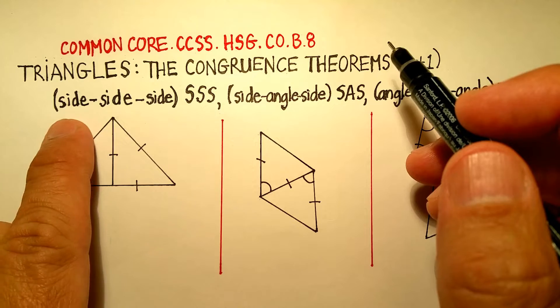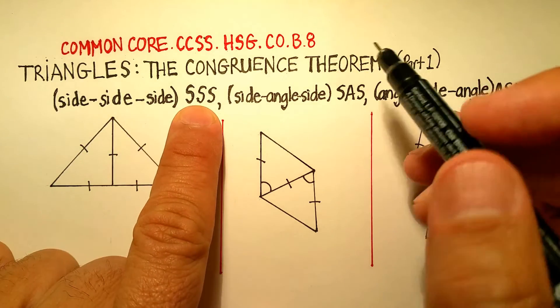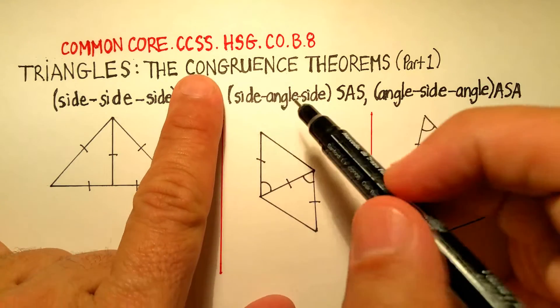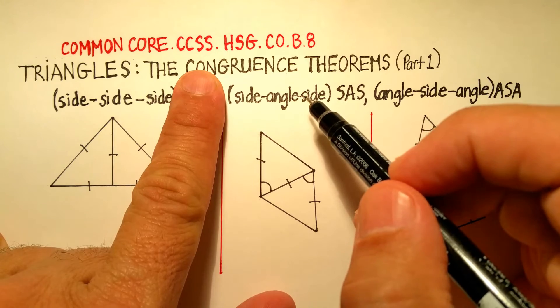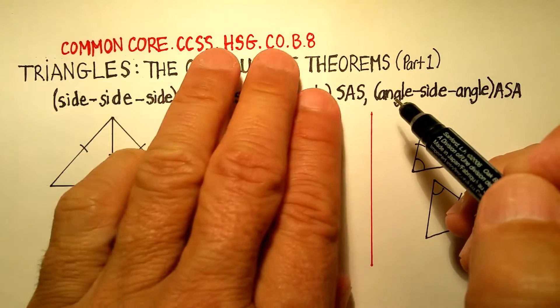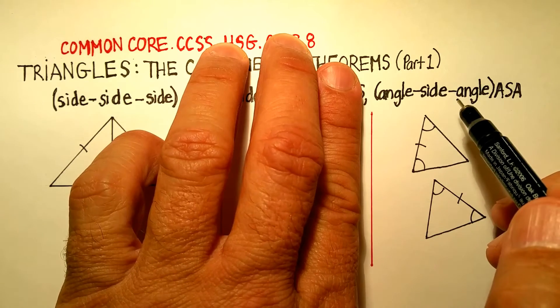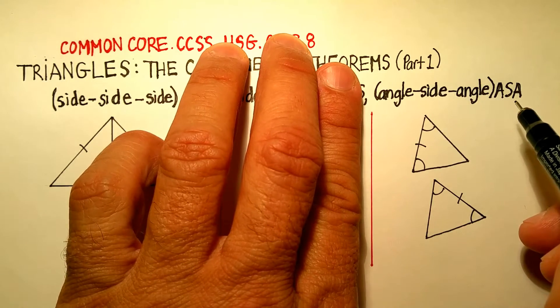There's three of them here. There's the side-side-side, or also known as SSS. There's the side-angle-side, which is known as SAS. And then there's the angle-side-angle, or the ASA.